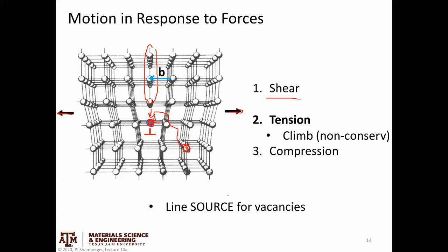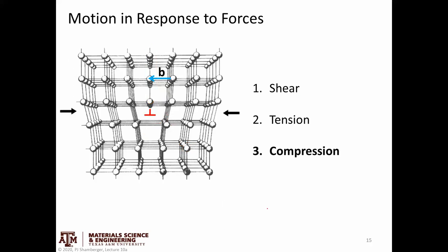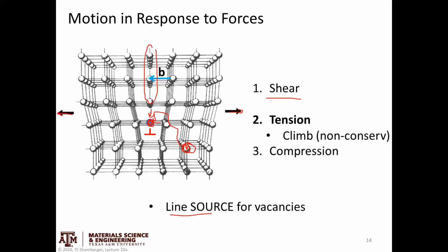This motion serves as a line source for vacancies — as the dislocation moves down, it creates vacancies in the lattice. That's a much harder form of motion because it also requires diffusion and the creation of other defects.